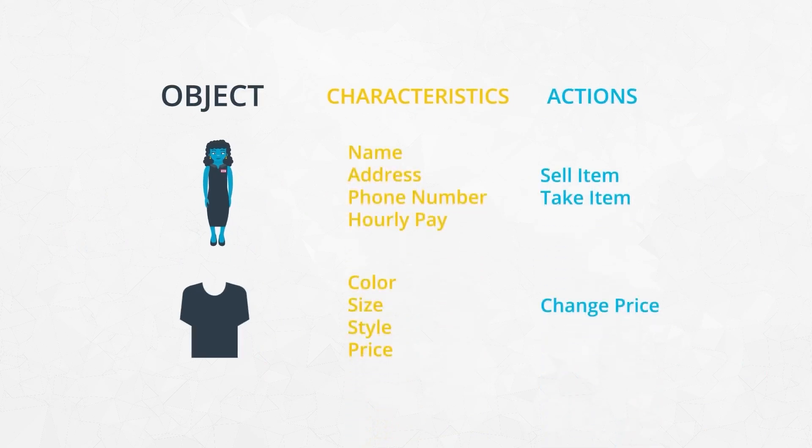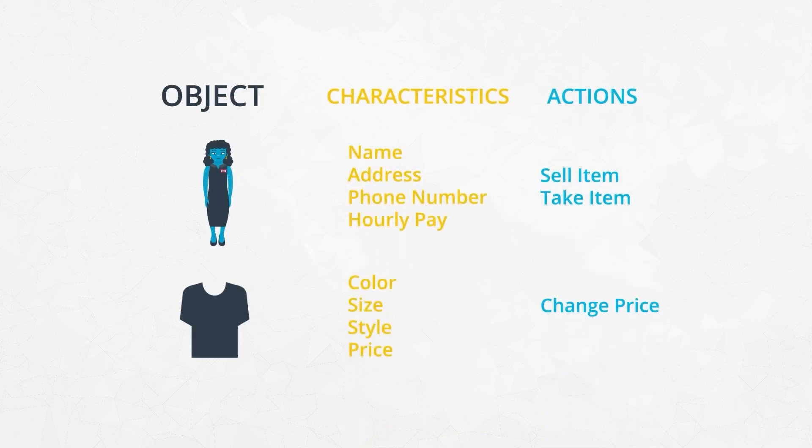As you gain experience writing object-oriented programs, keep this idea in mind: an object has characteristics and actions. Before you start coding, let's get a better sense for what an object really is.